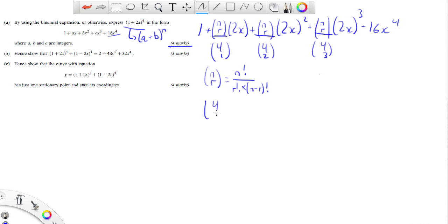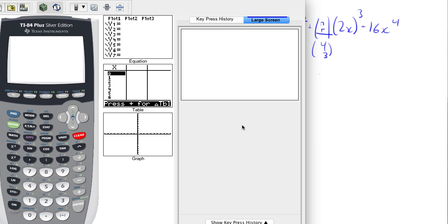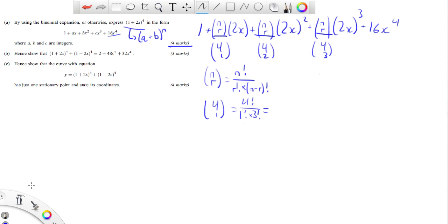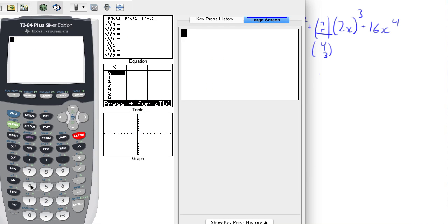So if I have 4 choose 1, this is going to be 4 factorial over 1 factorial times 3 factorial. Now I know what you're thinking, this is going to take forever, but don't forget, this is on your Core 2 paper. So we can use a calculator. Again, I'm using my TI-84 here. If you're using your Casio, it may be a little bit different. And if you're a student of mine, then I will happily guide you through it. Your calculator may even have a factorial button here, which is the little exclamation point. If mine does, I haven't been able to see it.